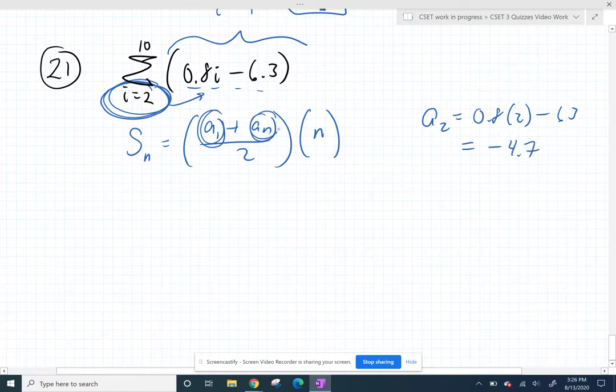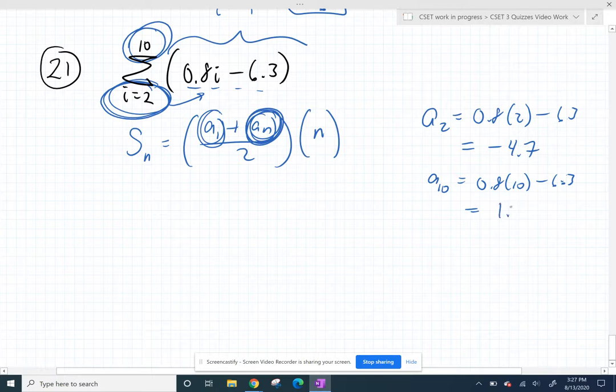And then my last term is just whatever I get when I plug in the top. So if I plug in a 10 for the i, I get 8 minus 6.3 is 1.7. So now I want to take the average of those, just add them up and divide by how many I have.